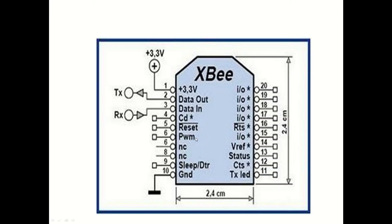The ZigBee module pin layout: pin 1 is supply connected to 3.3V; pin 2 is transmitted data, connected to the RXT pin of the microcontroller; pin 3 is receiver data of ZigBee, connected to the TXT pin of the microcontroller; pin 10 is GND. Other pins include LED indicators, I/O, reference, ADC, PWM, and reset.